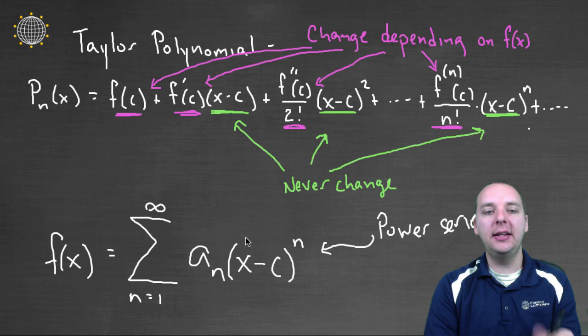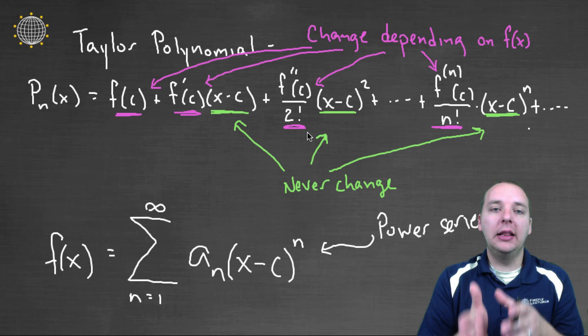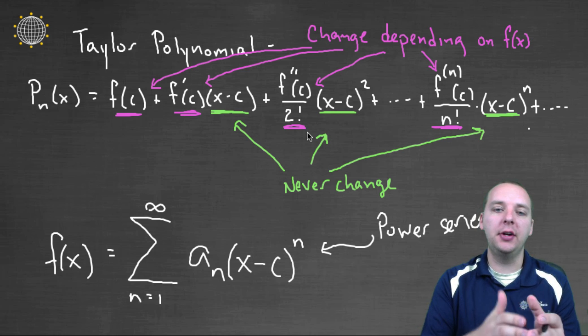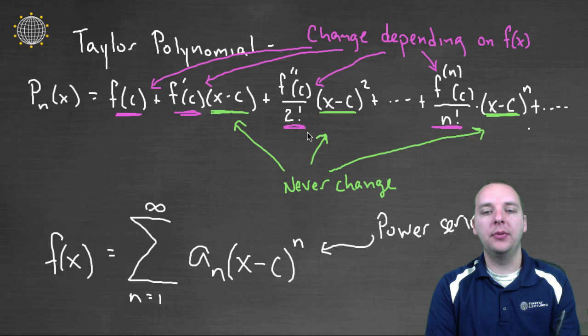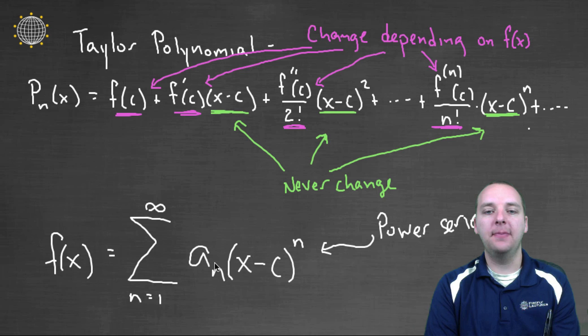And there's a lot of details. I can't stress that enough. I'm going through this very quickly. We need to talk more in depth about what it means to equal this series and things like that. But just understand that as this approximation gets better and better and better, it will wind up looking like the cosine function or the sine function or e to the x or what have you, okay?